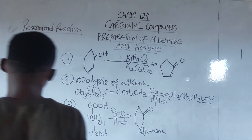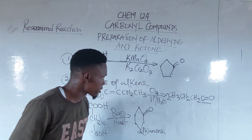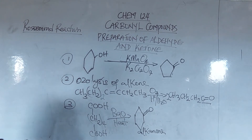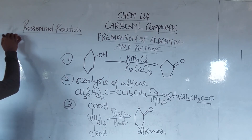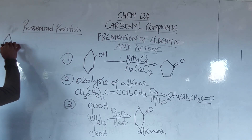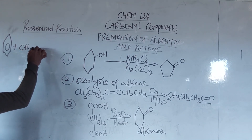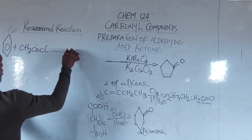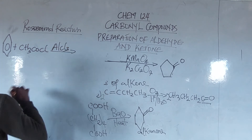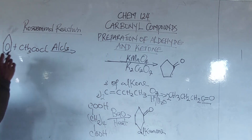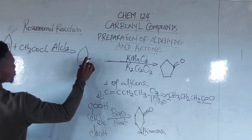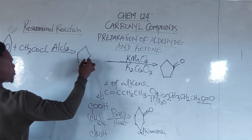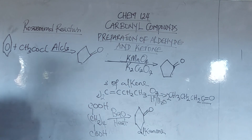We can also prepare an aryl ketone through the Friedel-Crafts acylation. What does it mean? It is a way of producing an aryl alkanone by reacting a benzene ring with an acid chloride in the presence of a catalyst called aluminum chloride. In the process, an aryl alkanone is produced.